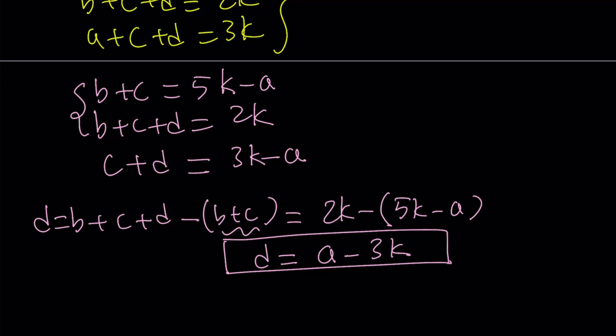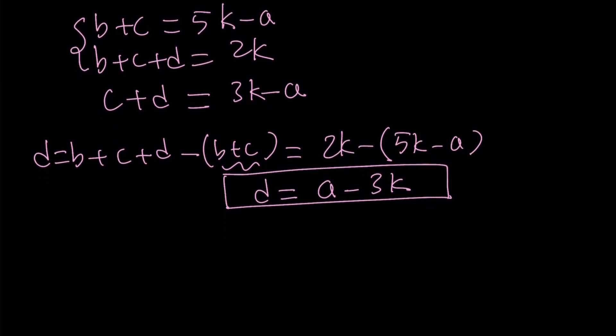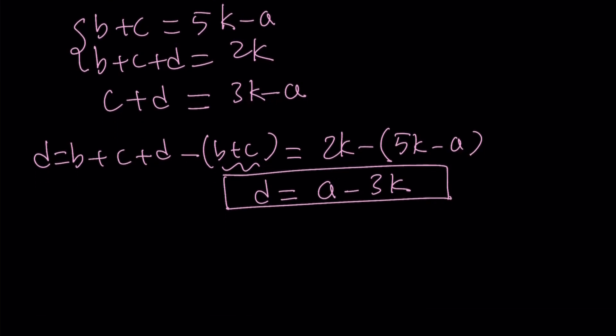So we got the value of d. Now I can go ahead and plug in whatever I got for d and find c. C is 3k minus a minus d. That's going to be 3k minus a minus d, which is a minus 3k. From here, we're going to get 3k plus 3k is 6k minus 2a.